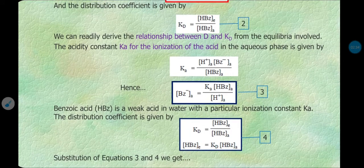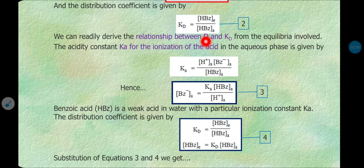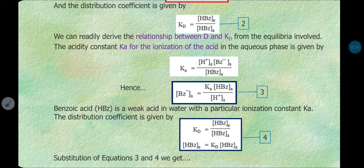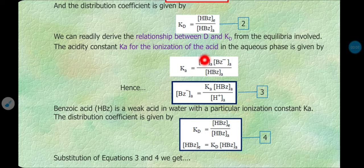From these two equations we can easily derive the relation between distribution ratio D and distribution coefficient Kd using equilibrium equations. We already know benzoic acid is a weak acid and partially ionized. The dissociation constant of a weak acid is given by Ka equals the concentration of products divided by the concentration of reactants.